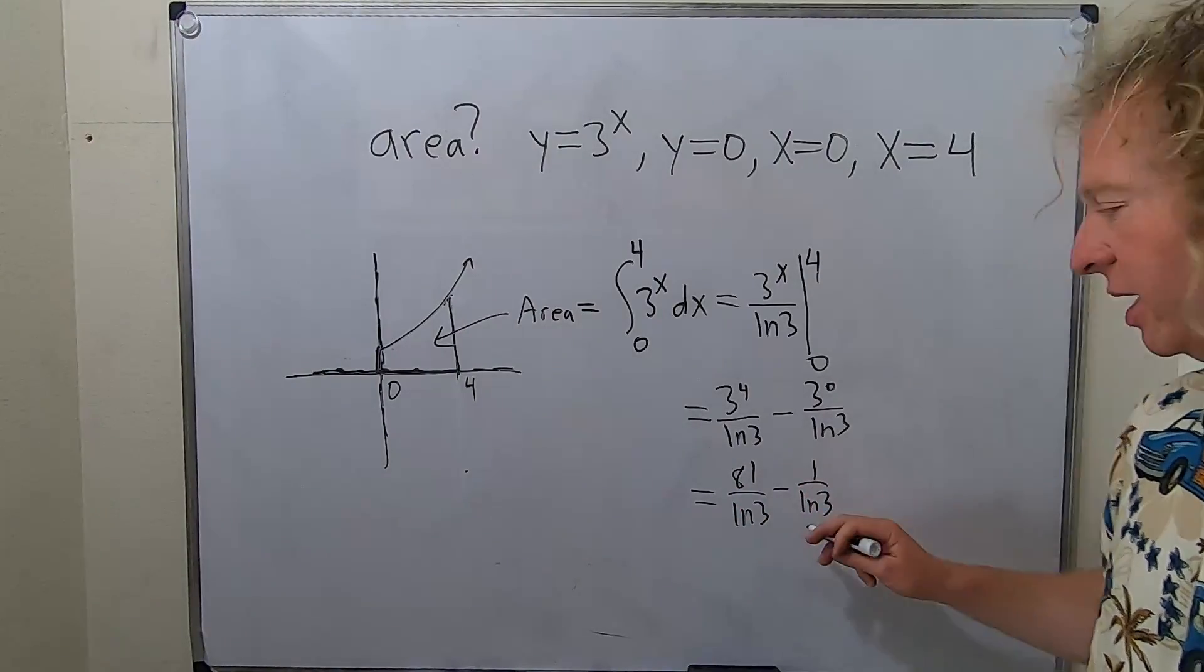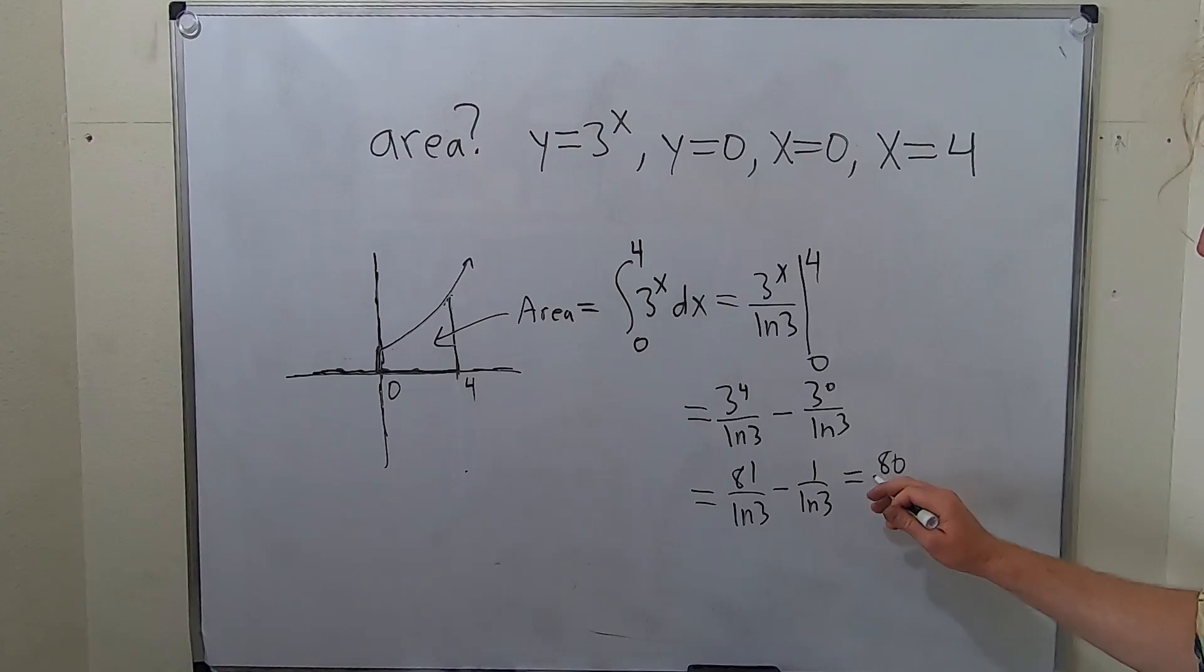81 minus 1 is 80, so we end up with 80 over the natural log of 3. And that would be the area under this graph.